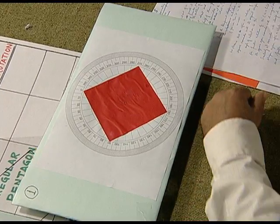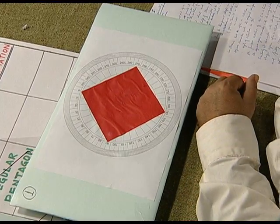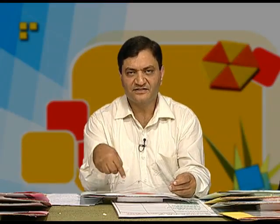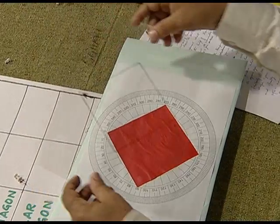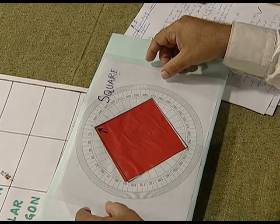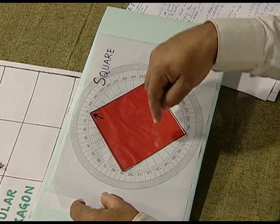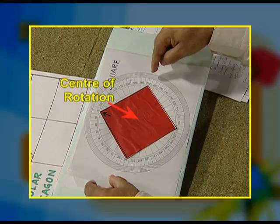Next, we take a transparent sheet and draw the outline of the square. We draw the square on this transparent sheet and then stick the thumb pin at the point of intersection of the diagonals of this square.